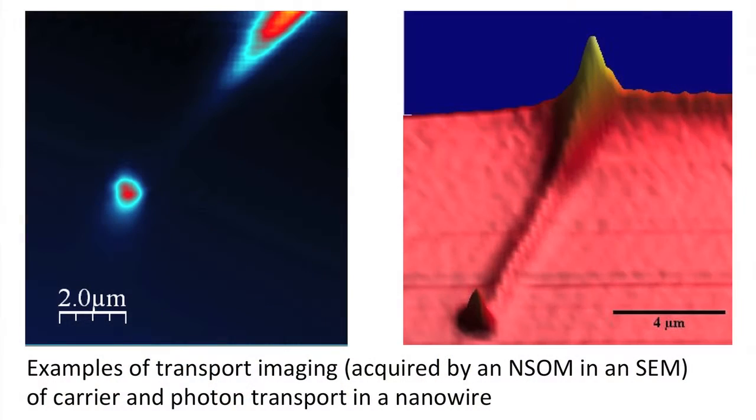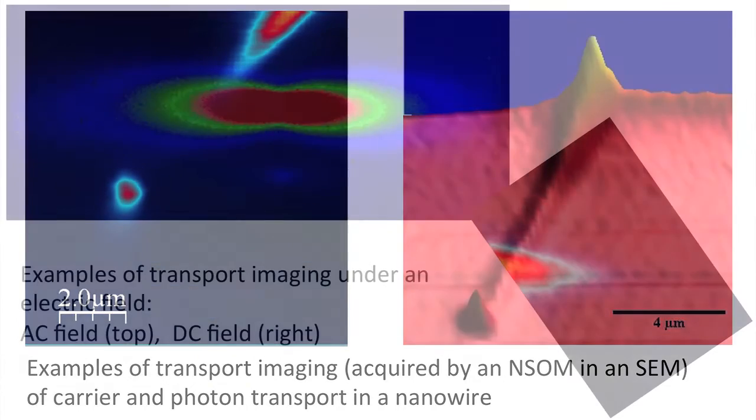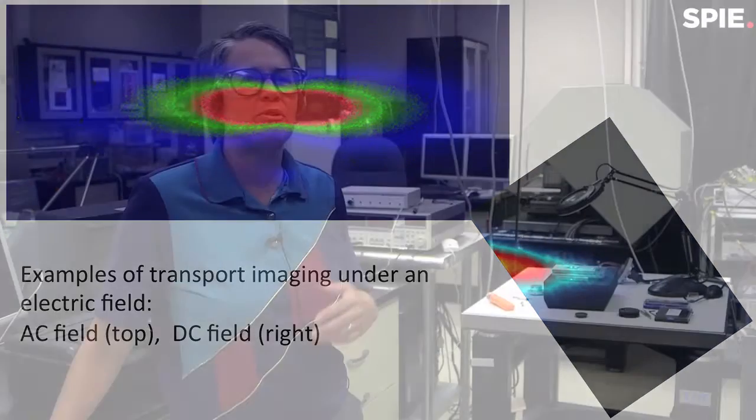One of the key properties of a solar cell material is that when we generate charge — which is done by the absorption of light from the sun — we need to move that charge to the contacts so that we can create electricity. The ability of charge to move effectively within a semiconductor is one of the most critical parameters in a solar cell. This technique will allow us to literally watch that motion and relate it to material parameters like crystal growth — all the things important to achieve the high efficiencies required for successful solar cell devices.